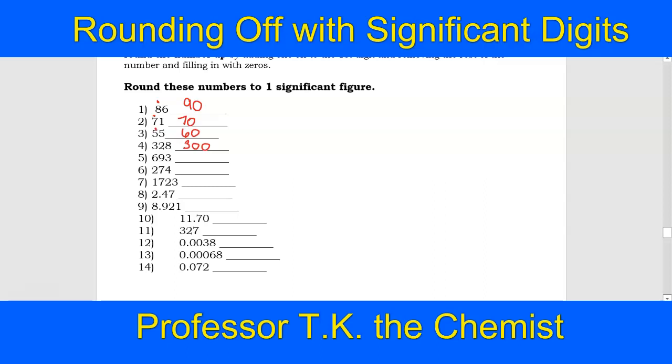For 693, I've got to put a dot above the six or a bar, whatever you want to denote that that's your first significant digit. The nine tells that six to go up to a seven, and you're going to fill in the other two digits with zeros. I'm going to pause the screen and let you do the other examples.